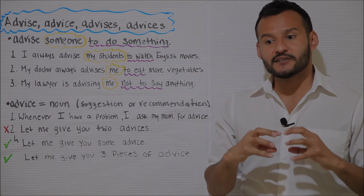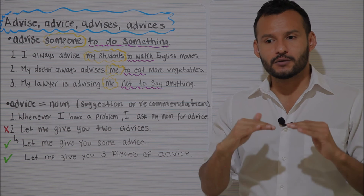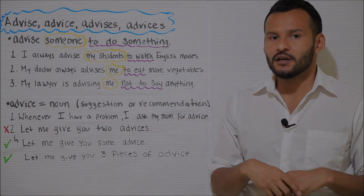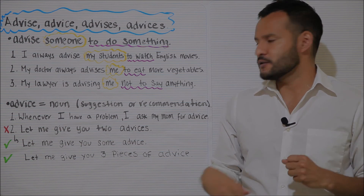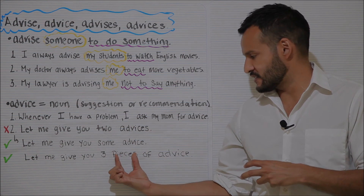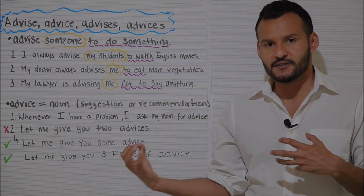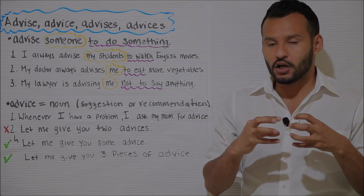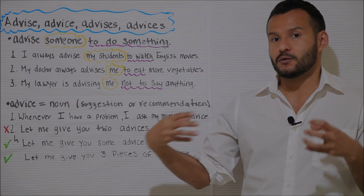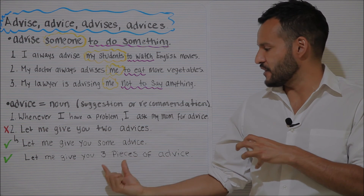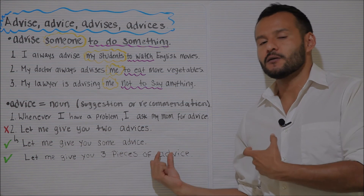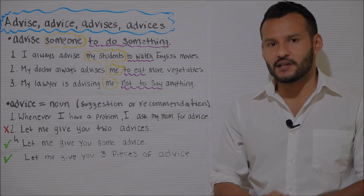If you feel it is important to count the number of suggestions for whatever reason, it is possible to say 'let me give you a piece of advice.' And in that context, you could also say 'let me give you three pieces of advice.' So basically, you're counting the pieces rather than the advice itself.